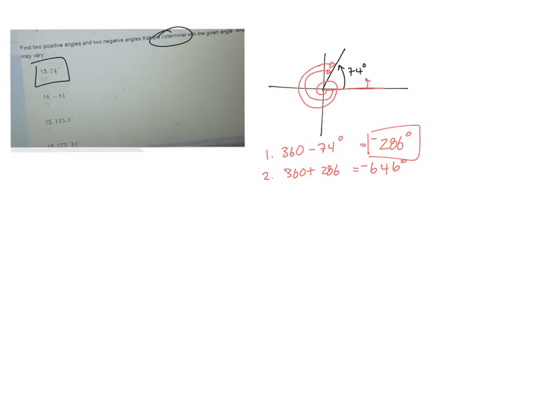So there's two negative ones. Let's do positive ones. Let's do blue for positive. So a positive one, oh, I have 74 degrees already, but what if I go around once and then to the 74? Right to there. So that'd be 360 plus 74. And what's that come out to? 434.